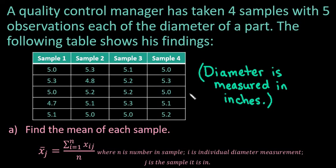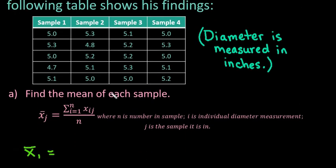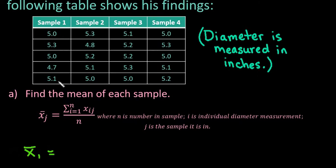Where you're going to start is you have to find the individual mean of each sample. This formula is saying that the mean of each sample J — so J is the sample being discussed. If I had x-bar sub one, that would be talking about sample one; x-bar sub two would be talking about sample two. You're going to take i as the individual data point — so i equals one would be five, two would be 5.35. It's really just finding the mean: the sum of all the values in that sample divided by the number of values, N, which in this case is five.